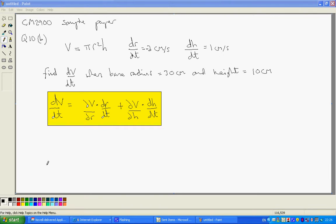We're asked to find the rate of change of the volume when the base radius is 30 centimeters and the height is 10 centimeters, given that the rate of change of the radius is minus 3 centimeters per second and the rate of change of the height is plus 1 centimeter per second.